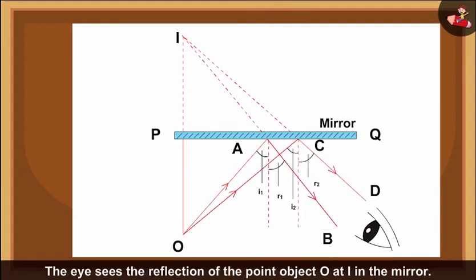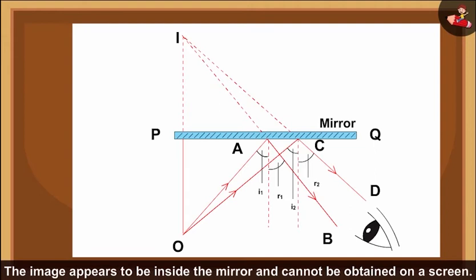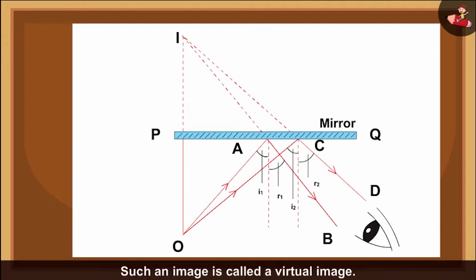The eye sees the reflection of the point object O at I in the mirror. The image appears to be inside the mirror and cannot be obtained on a screen. Such an image is called a virtual image. So, all plane mirrors form virtual images.